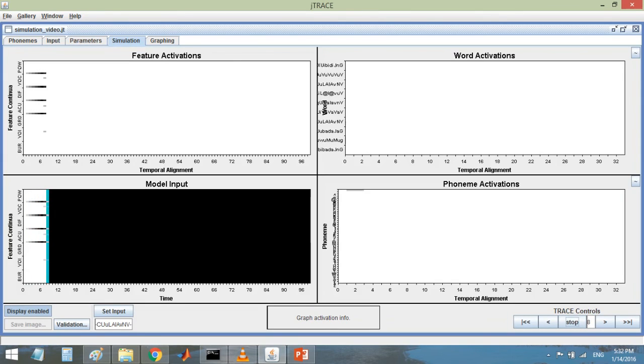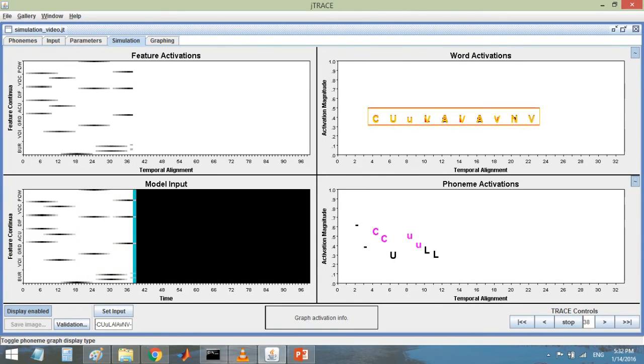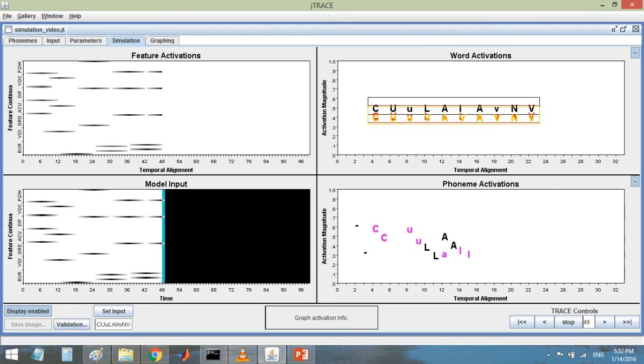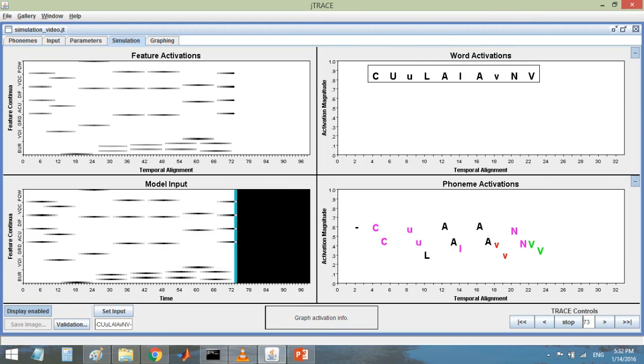In the left two panels, we can see the model inputs and features are activated. In the right two panels, we can see both phonemes and word activations, and which words are competing with the target word.